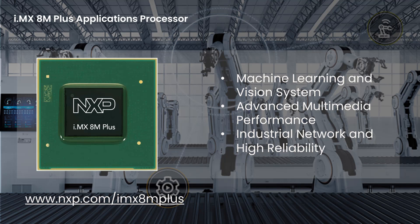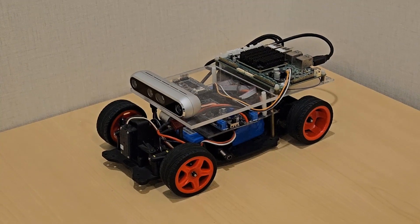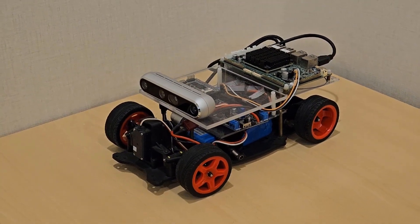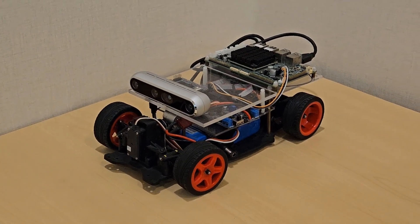The processor includes a powerful quad-core ARM Cortex-A53 processor with a neural processing unit (NPU), dual image signal processors (ISP), and two camera inputs for an effective advanced vision system.